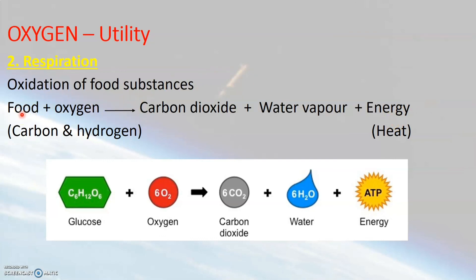Food is in the form of glucose, which is a compound made up of carbon and hydrogen — it is a hydrocarbon. This food substance in the form of glucose gets oxidized to form the products carbon dioxide and water vapour, and heat energy is liberated. Respiration involves breathing — there is intake of oxygen, and we give out carbon dioxide during respiration. So oxygen gas is essential for both the process of combustion and the process of respiration in all living things.